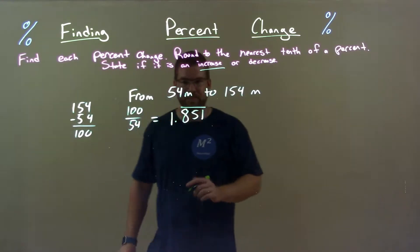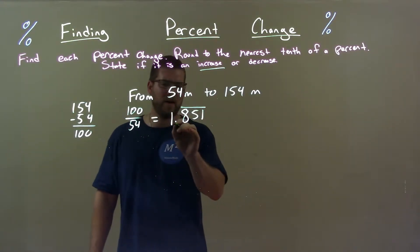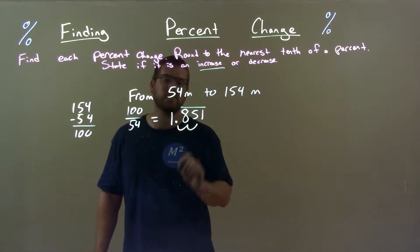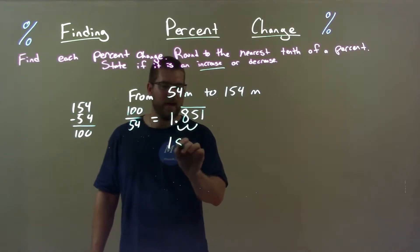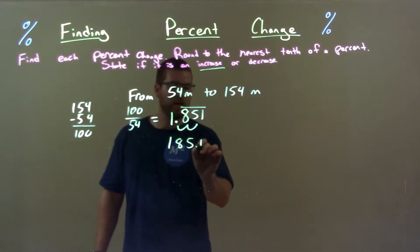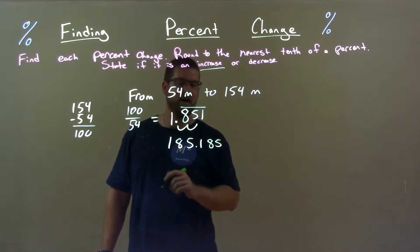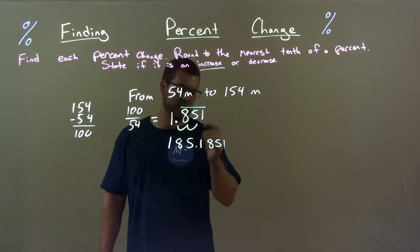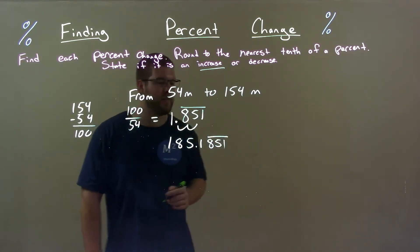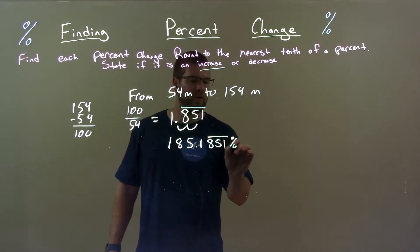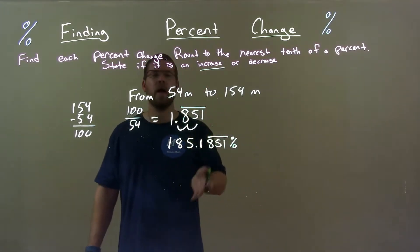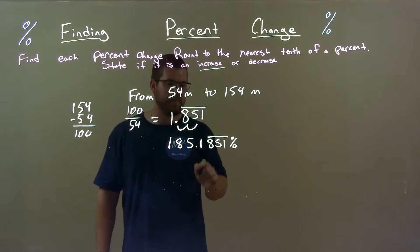All right, convert that to a percent. Decimal point two spots to the right: 185.1, and then we have 851 repeating. Let's keep it consistent here. 851 is the part that repeats forever. I mean we could put it earlier but it's okay by one digit.